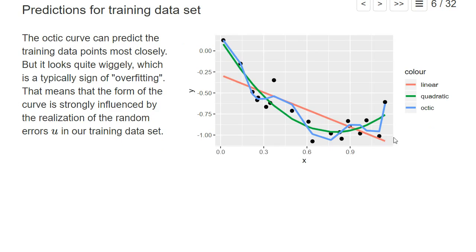The linear one is the red line, the quadratic is the green line, and the blue very wiggly function is the optic functional form. What we see is that the optic form matches the training dataset we used to estimate the form the best.